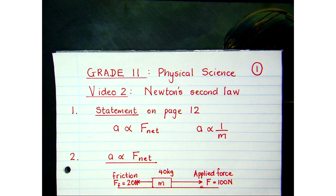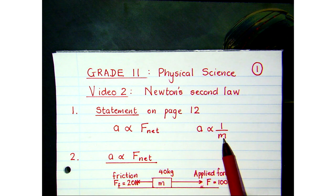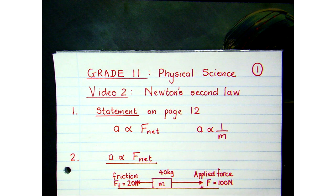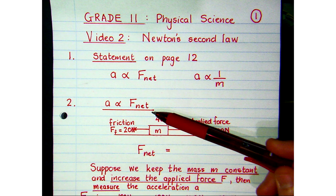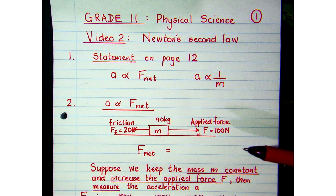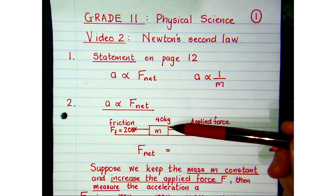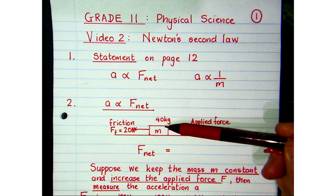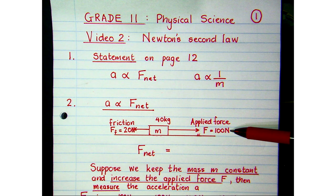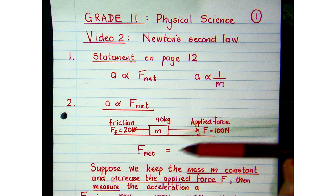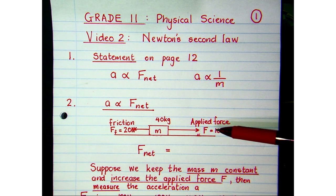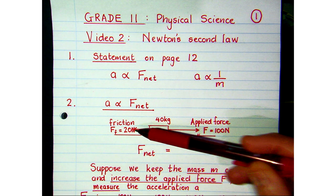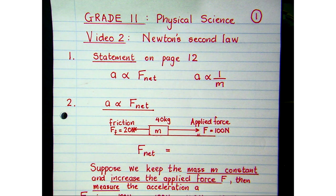The first statement is that acceleration is directly proportional to the net force, and the second is that acceleration is inversely proportional to the mass. Let's look at an investigation to verify the first relationship. Suppose we have a 40 kg mass kept constant, we apply a forward force of 100 newtons, and while it slides along the surface it experiences a frictional force of 20 newtons. In Newton's second law it's important to identify all forces and then work out the net force.